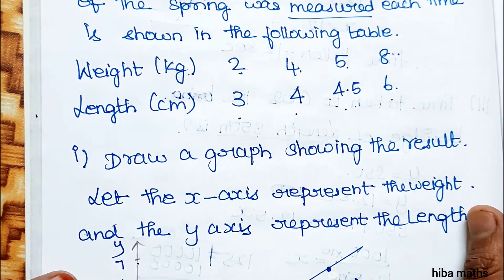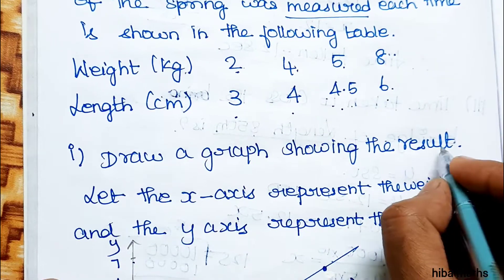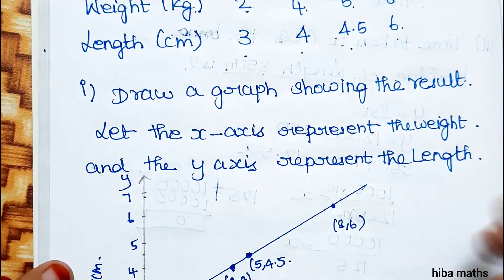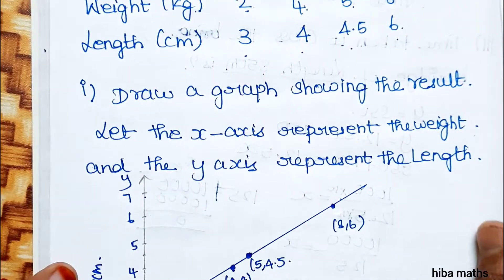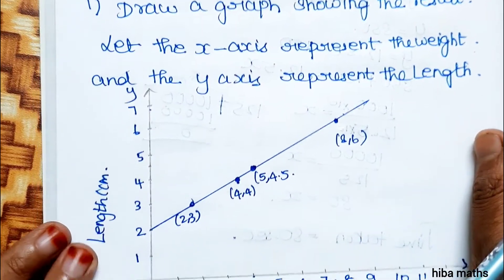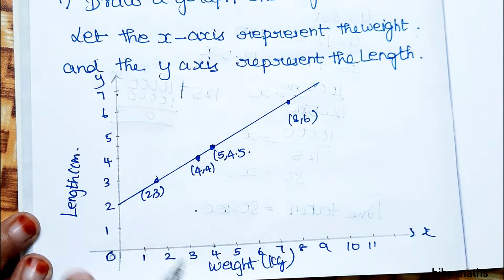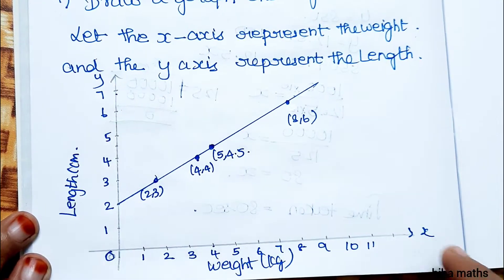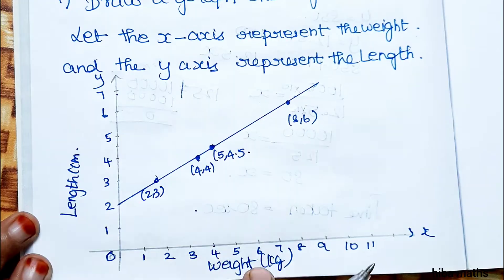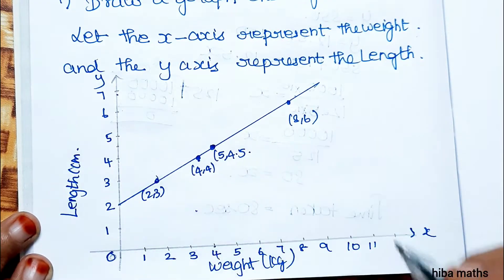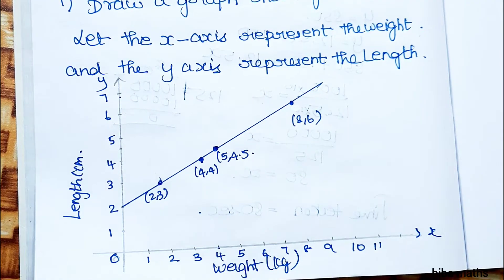Draw a graph showing the result. We plot this result as a graph. The x-axis is weight and the y-axis is length. Now the graph is ready. Normally you plot the graph: x-axis, y-axis, weight, length — plot the points. With the graph, we plot in the same line and draw a line. We plot our points correctly.